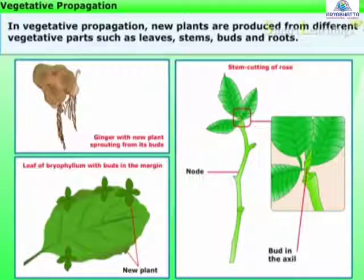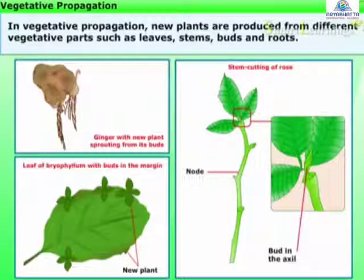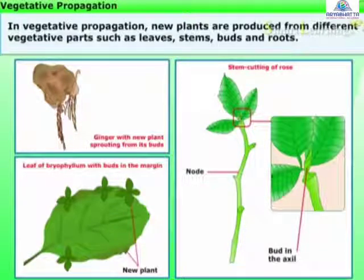Vegetative propagation is a type of asexual reproduction in which new plants are produced from different vegetative parts such as leaves, stems, buds, and roots.